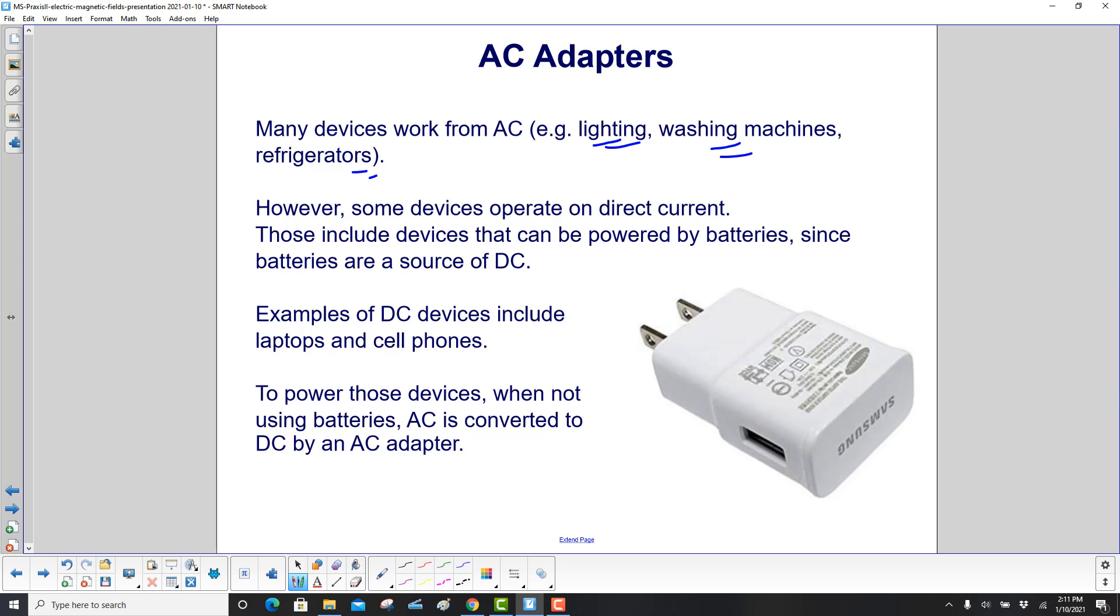However, some devices operate on direct current. These include devices that can be powered by batteries, since batteries are a source of DC. Examples of DC devices include laptops and cell phones.